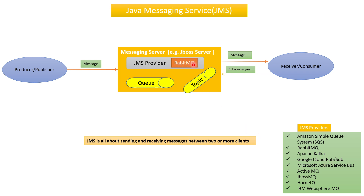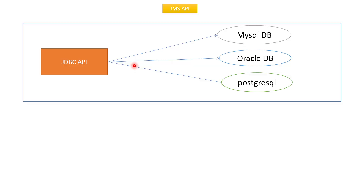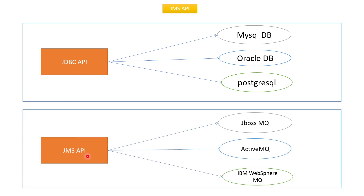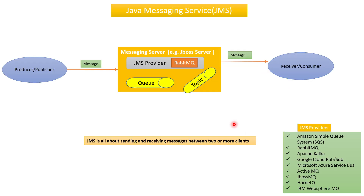The messaging service works through a JMS provider, similar to how JDBC API works. Just as JDBC API lets us connect to MySQL, Oracle, or PostgreSQL databases, the JMS API lets us connect to JBoss MQ, RabbitMQ, ActiveMQ, or IBM MQ — all through the same JMS API.